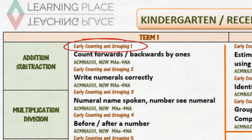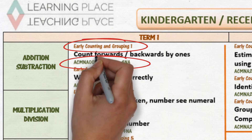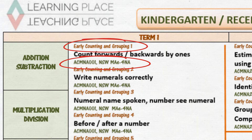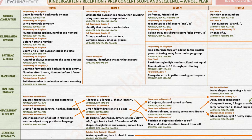Number and algebra concepts are taught informally in the first year of school. At a learning place, a teaching place, these are called early counting and grouping. The abbreviated text identifies the Australian curriculum and NSW syllabus content descriptions. The focus of number and algebra in Term 1 is counting.